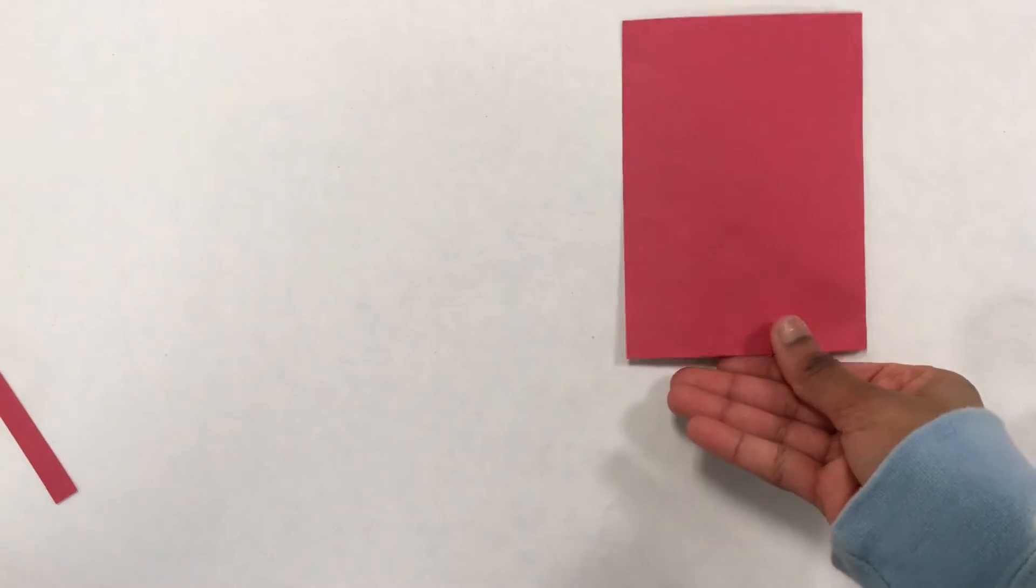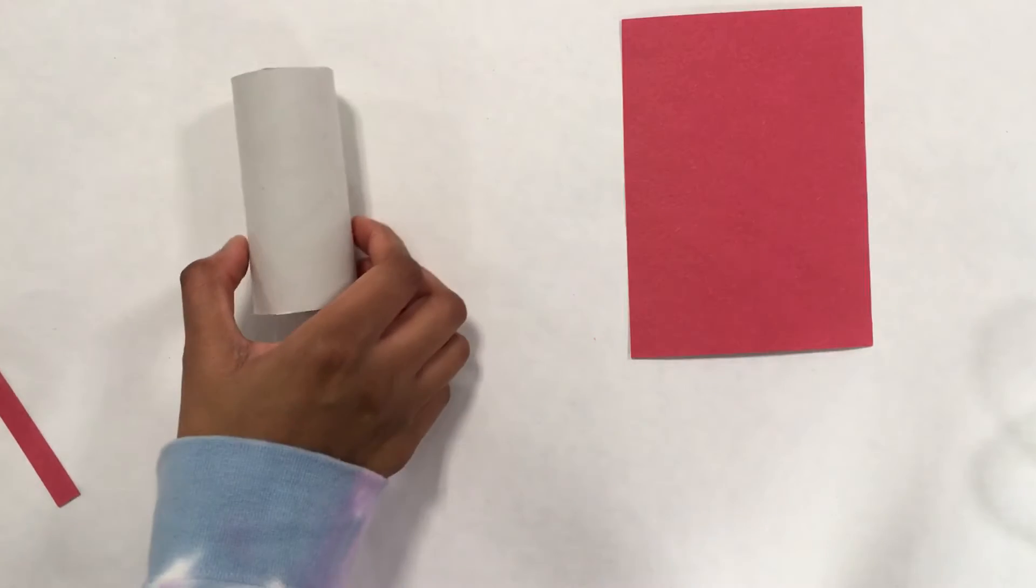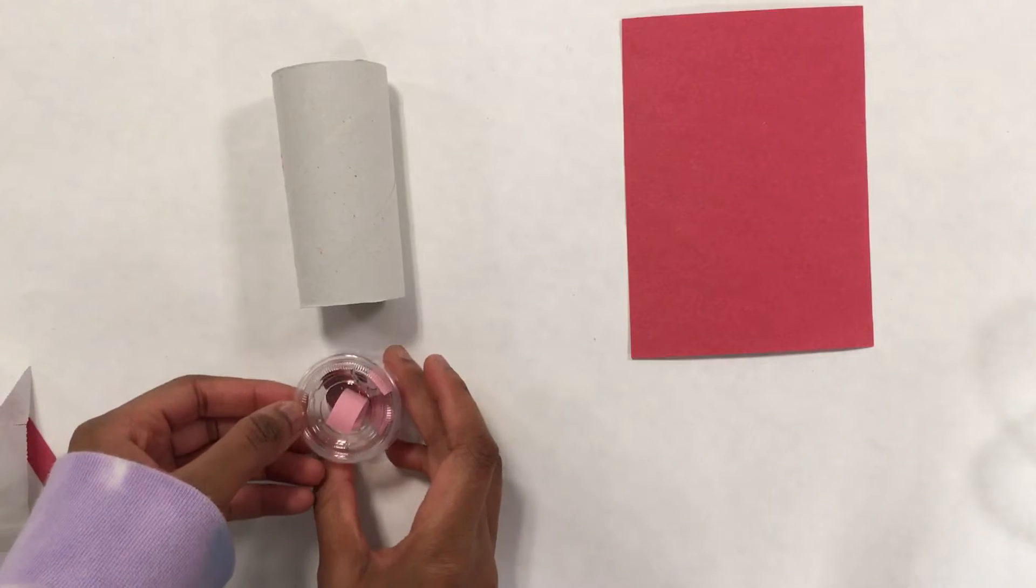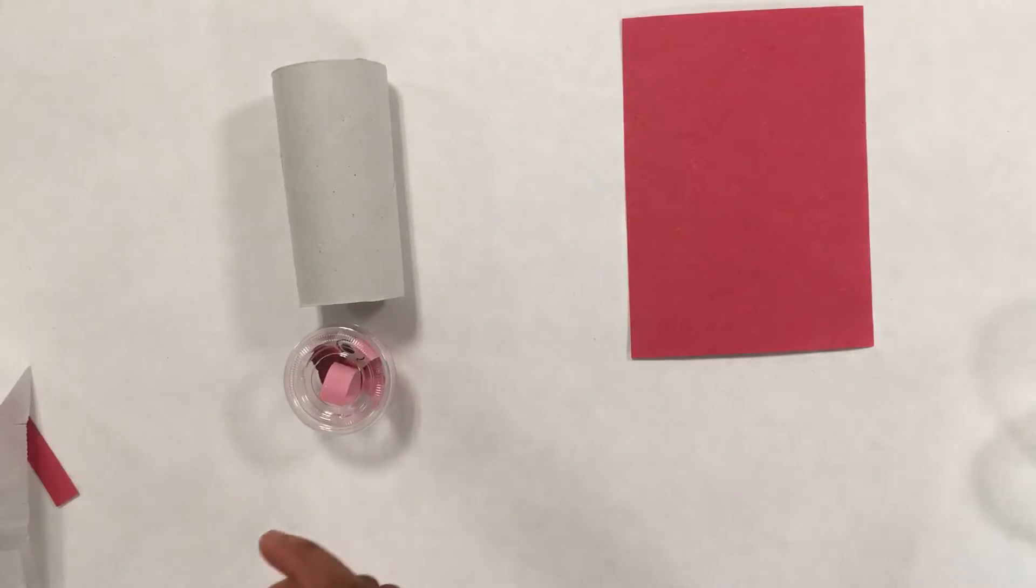So when you get your bag, you will get one red card, one toilet paper roll, a cup that has two eyes, three strips of pink paper, and two small hearts.